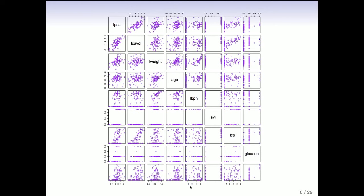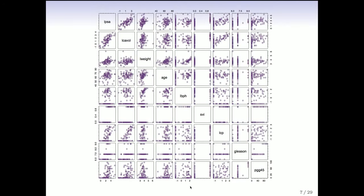We have the PSA measurement for each subject, along with a number of clinical and blood measurements — some on the cancer itself and some from the blood, measuring cancer size and severity. This is a scatterplot matrix which shows the data. On the diagonal is the name of each variable, and each small plot is a pair of variables. In one picture, if you've got a relatively small number of variables, you can see all the data at once and understand which variables are correlated.